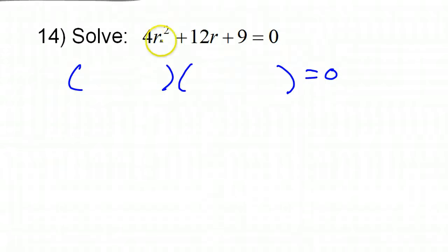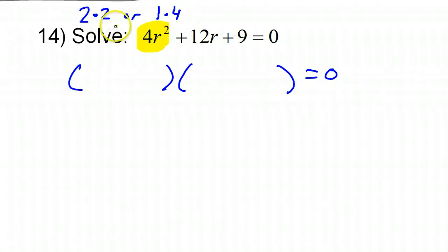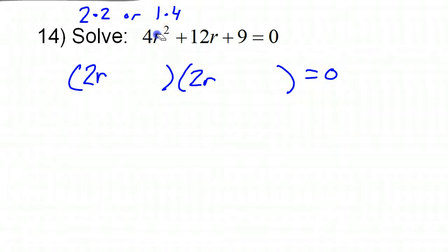This time we have to be very careful with the first term because it could factor more than one way. 4 could be 2 times 2, or it could factor as 1 times 4. I'm going to start with the 2 times 2 option, so that would mean 2r times 2r to make my 4r squared. If it doesn't work out, I'll come back and try the 1 and 4 option.